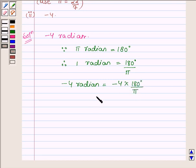And since π is equal to 22 upon 7, so we have minus 4 into 180 degrees upon 22 into 7, which is further equal to minus 2520 upon 11 degrees.